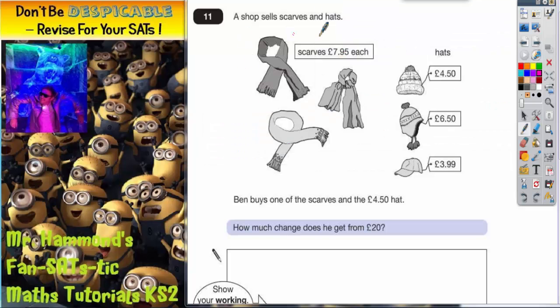Question 11. A shop sells scarves and hats. Scarves are £7.95 each, no matter which one you buy. The hats are different prices though. They are £4.50, £6.50, and £3.99.